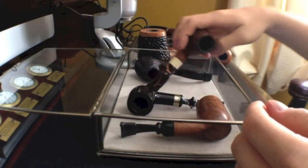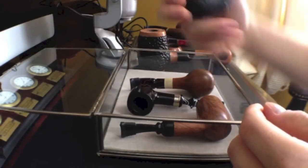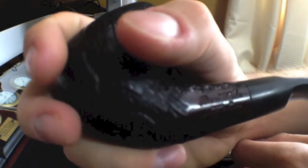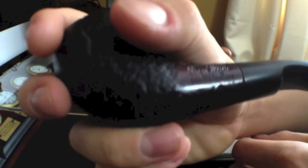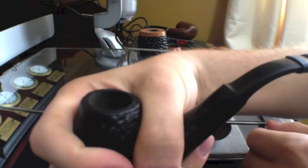The next one here is a Ben Wade. Nice rustication there, really goes with the grain. I haven't seen much rustication that follows the grain itself. As you can see, it's more of a wave rustication rather than just simple dimples.